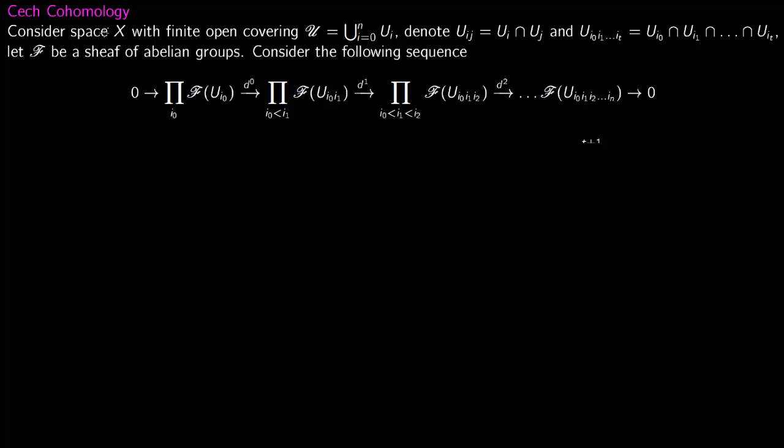So we finally come to Čech cohomology. You consider the space X with a finite open covering, so it is covered by n+1 sets going from 0 to n. You denote the intersection U_ij as U_i intersection U_j.